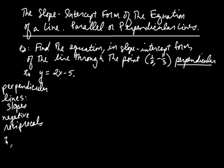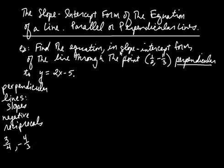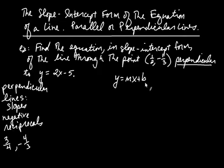For example, if you had the number three-fourths, the negative reciprocal would be: take the reciprocal, which is four-thirds, and then the negative of that. So these two numbers are negative reciprocals. Now, we're asked to find the equation of a line in slope-intercept form, so we're looking for y equals m times x plus b.